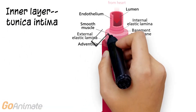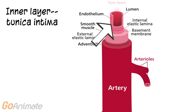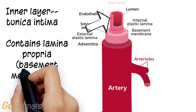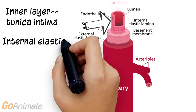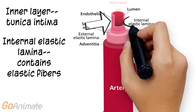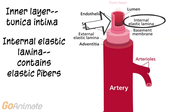The inner layer is called the tunica intima. It contains a thin layer of connective tissue called the lamina propria. It also contains a layer called the internal elastic lamina, which contains elastic fibers.